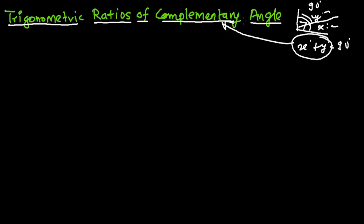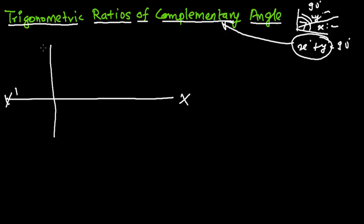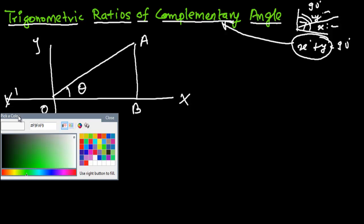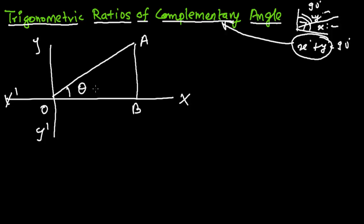Now let's draw a right angle triangle on a graph. This is the x-axis and this is the y-axis. Taking the origin, I'm drawing a line forming a right angle triangle OAB, where this angle is theta degrees. Before finding the trig ratios, we should know the perpendicular, base, and hypotenuse. The side opposite the reference angle is the perpendicular, the side in which the reference angle is seated is the base, and the longest part is the hypotenuse.